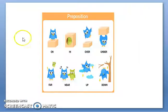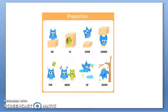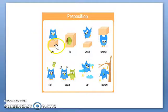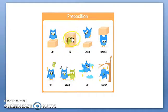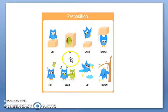Next one is preposition. Look at the word 'position' inside it — preposition tells you the position of a noun, or the relationship of one noun with another. For example, the birdie is on the box — you are telling the position of the birdie. You can say the birdie is inside the box or in the box. So on, in, over — these words are prepositions.